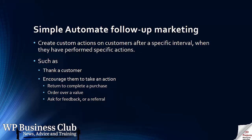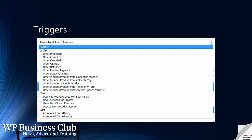This is how the AutomateWoo program works. We have a selection of triggers — these are the actions which will start a workflow, and they're pretty easy to understand: orders processing, completed, cancelled, on hold, etc. And you'll see at the bottom there are two cart ones: abandoned cart for users and for guests.